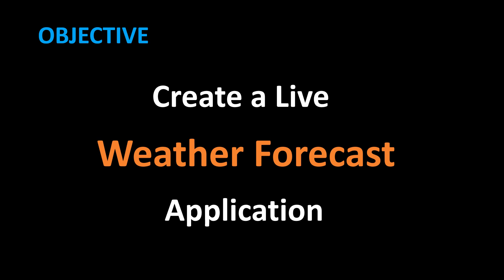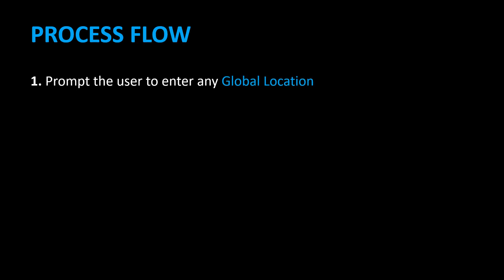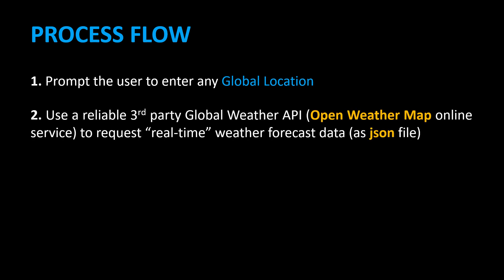Let's create a live weather forecast application in Python. We will first decide on the user side process flow. Number one: we will prompt the user to enter any global location. Number two: use a reliable third-party global weather API.